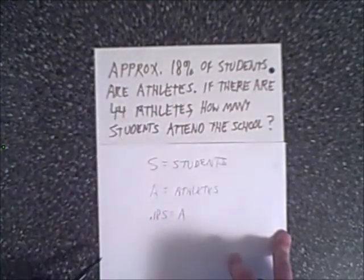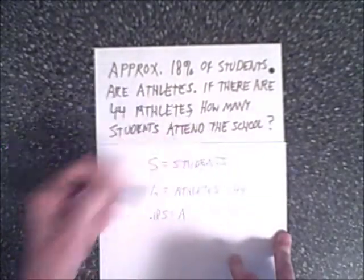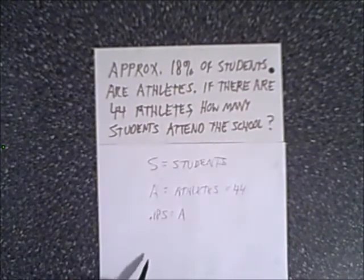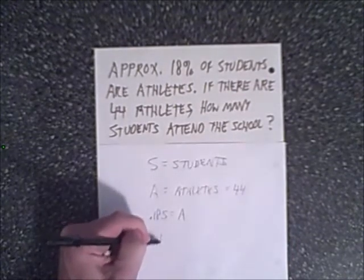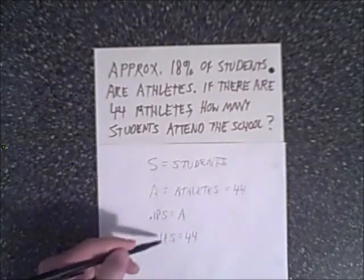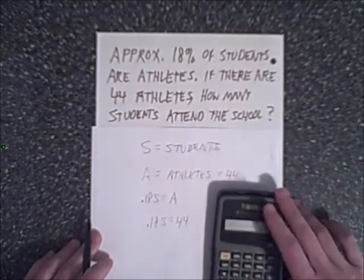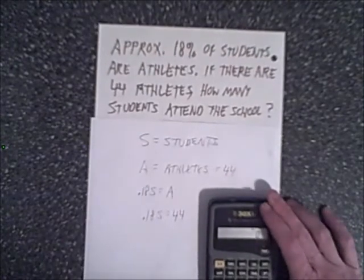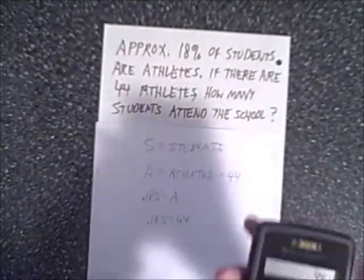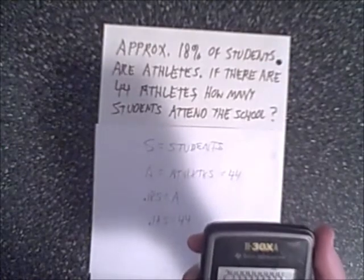If there are 44 athletes, that gives us more information. So A equals athletes, which equals 44. How many students attend the school? We can use direct substitution: 0.18 times students equals 44. This is a straightforward algebra problem. Using a calculator, we take 44 divided by 0.18 and we get 244.44.